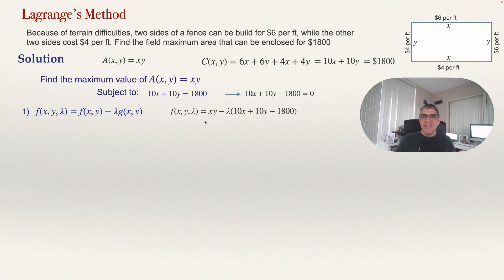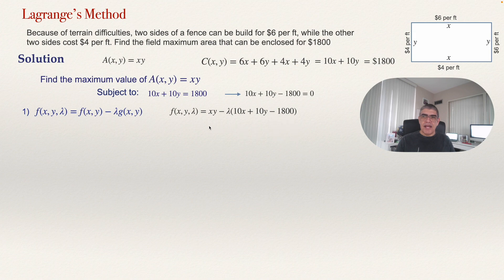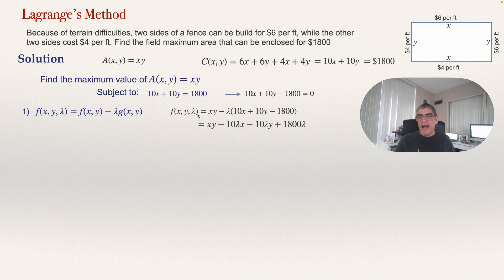Step two: find the partial derivative with respect to each variable. We now have three variables — the two original variables X and Y, and the new variable lambda. So we find the partial derivative of the Lagrange function with respect to X, with respect to Y, and with respect to lambda.